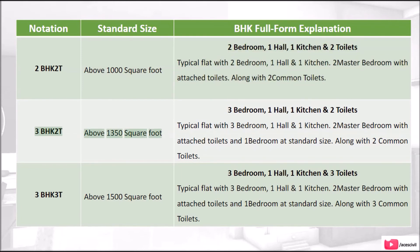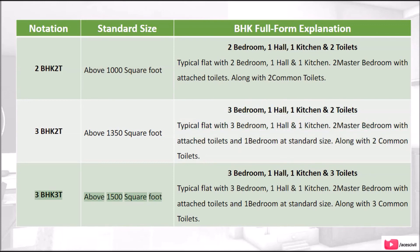3 BHK 2T: above 1,350 square feet. 3 BHK 3T: above 1,500 square feet. 3 bedrooms, 1 hall and 1 kitchen. A typical flat with 3 bedrooms, 1 hall and 1 kitchen — 2 master bedrooms with attached toilets and 1 bedroom at standard size, along with 2 or 3 common toilets respectively.